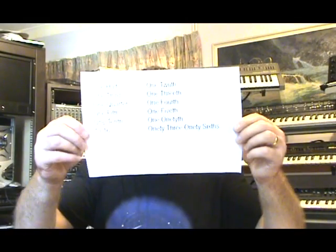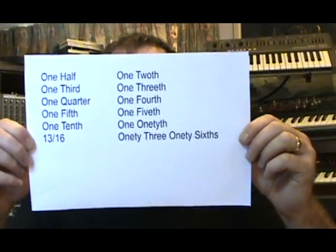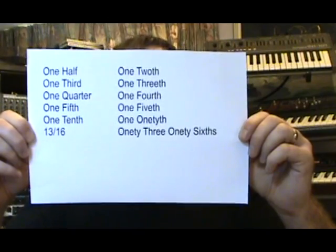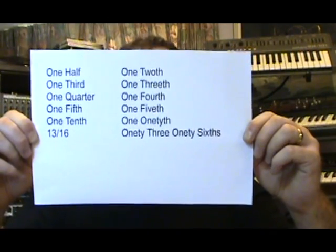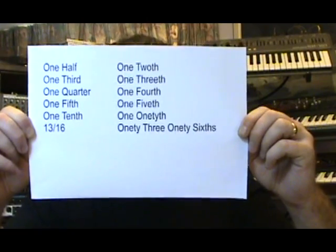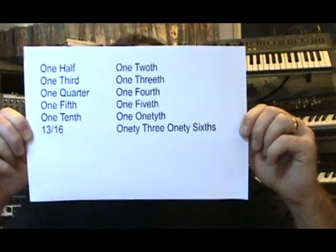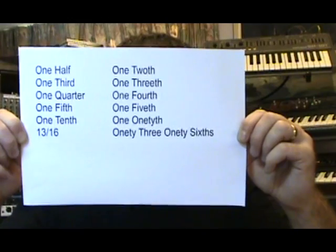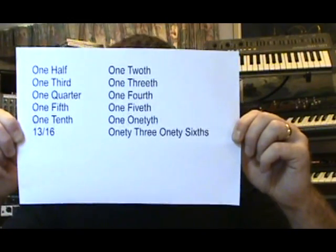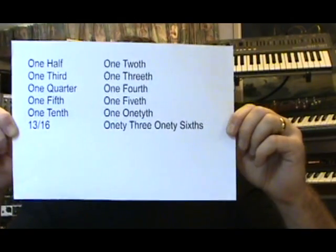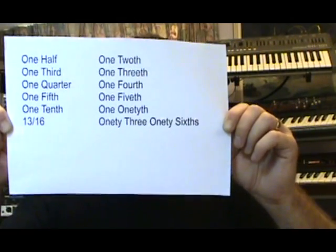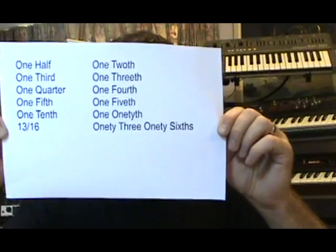One final point: fractions. We've got one-half — what is a half? It's a one-tooth, of course. And one-third is one-threeth. One-quarter is one-fourth. One-fifth is, in fact, one-fifth. One-tenth is one-one-tieth. And my last example: 13-sixteenths would actually be one-two-three, one-two-sixths.